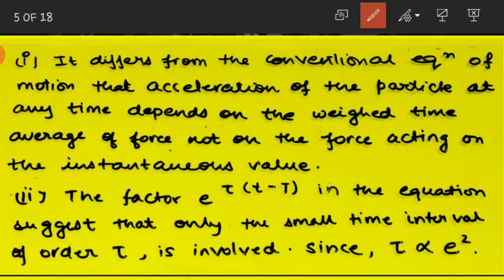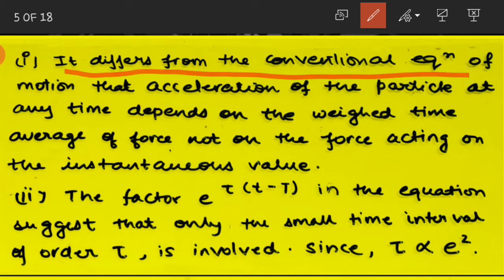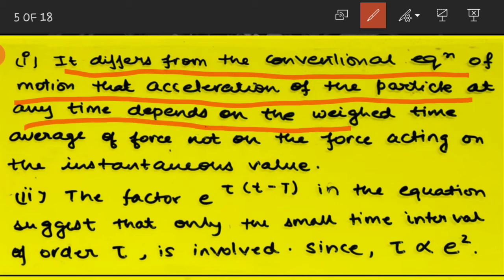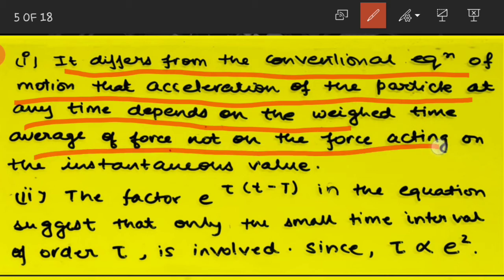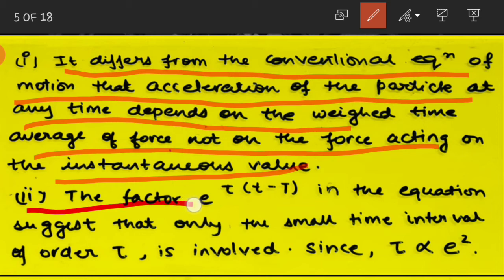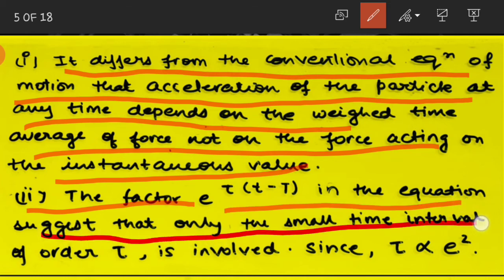This equation differs from the conventional dynamical equation of motion in that the acceleration of the particle at any time depends not on the instantaneous value of the force acting, but on the weighted time average of the force. The factor e^((t′−t)/τ) in the equation suggests that only a small time interval of order τ is involved, since τ is directly proportional to e².